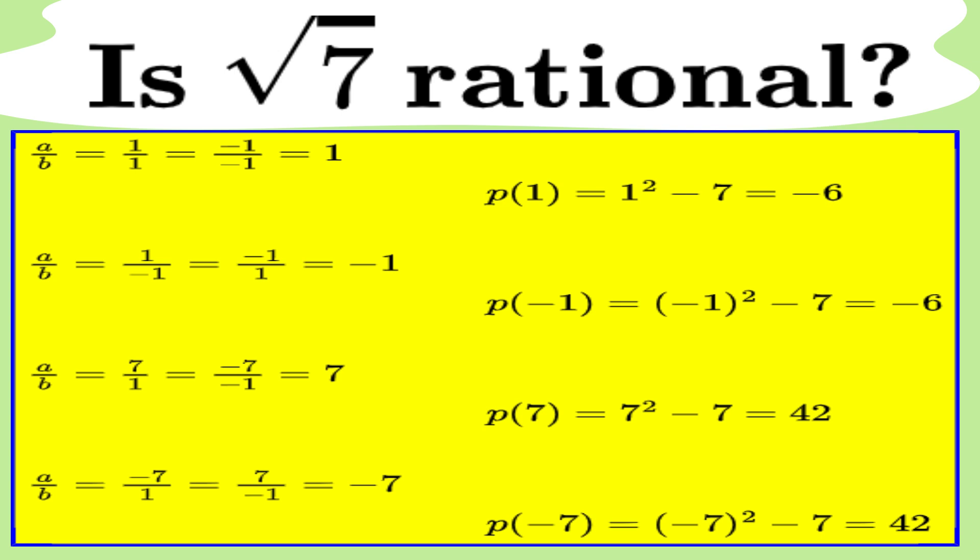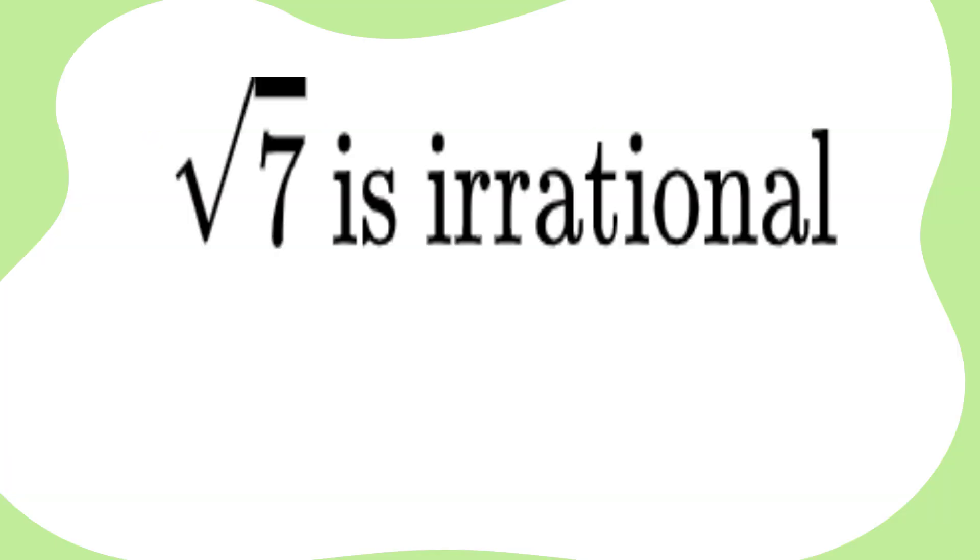None of these candidates work. And here's the kicker. Since we've tested all the possibilities and none of them fit, we can safely say that no rational roots exist for this equation. Therefore, the assumption that the square root of 7 is rational has been completely debunked. It's like we've been hunting down a ghost all along, and now we've finally caught it. The square root of 7 is irrational. Case closed.